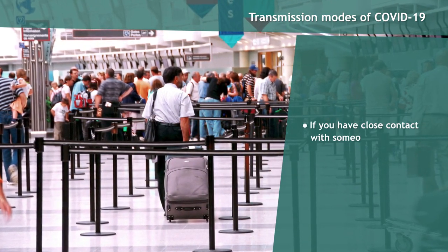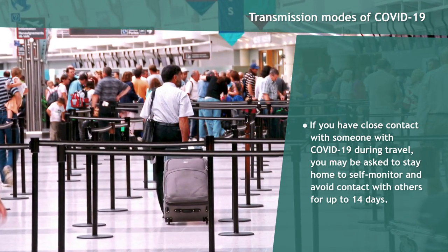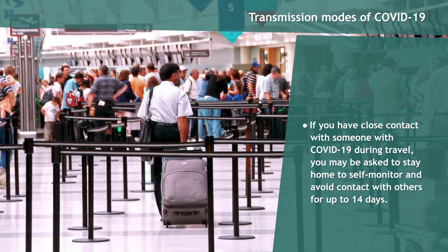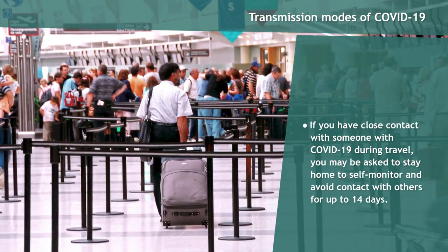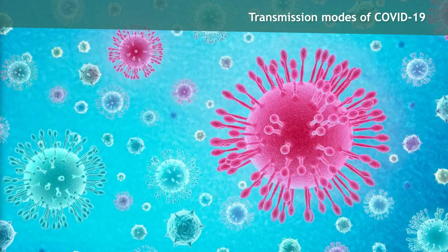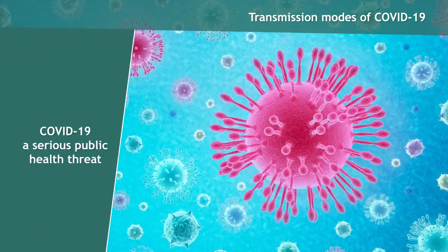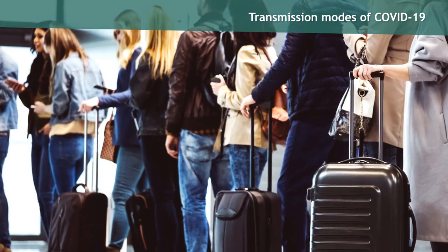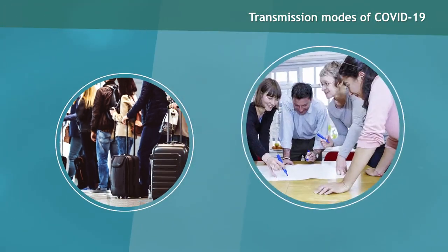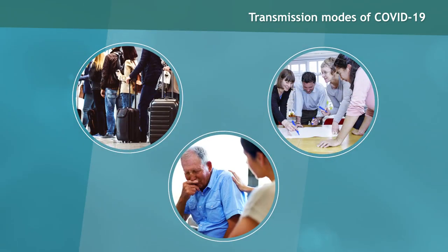Travelers returning from affected locations with community spread are also at elevated risk of exposure. If you have close contact with someone with COVID-19 during travel, you may be asked to stay home to self-monitor and avoid contact with others for up to 14 days. The CDC currently considers this virus a very serious public health threat. There are elevated risks associated with travel, close contact activities, and caring for symptomatic patients.